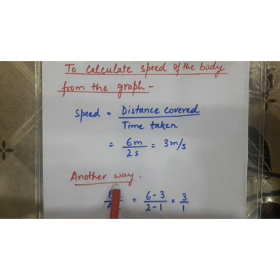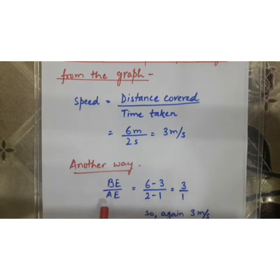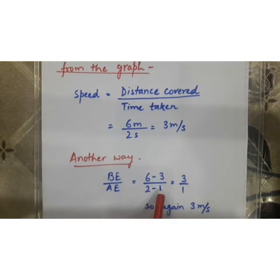Now, another way we can take is that BE upon AE which is shown in the graph. BE is equal to 6 minus 3 and AE is equal to 2 minus 1. Again, we are getting the 3 upon 1. So, that will also be 3 m per second, the speed.